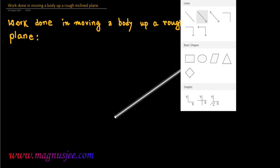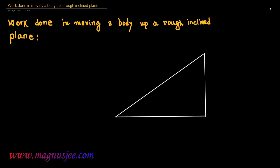We can draw a diagram of the inclined plane. This is the inclined plane, the vertical plane and horizontal plane. Theta is the angle of inclination and AB is the inclined plane.